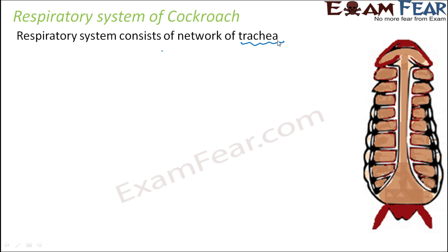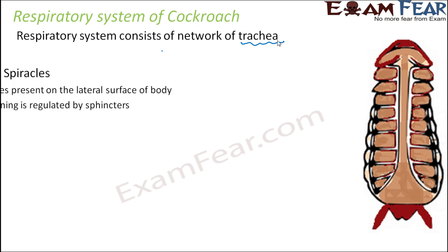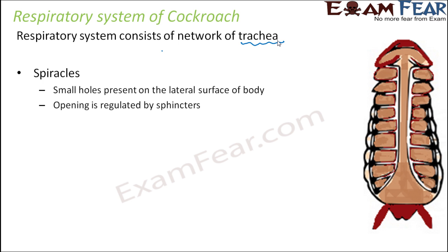Trachea are tube-like structures, as you can see here. There are some small holes present on the lateral surface of the body which are known as spiracles. Here you can see the network of trachea — one tube-like structure branching into different tubes. This entire arrangement is the network of trachea.